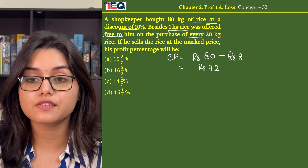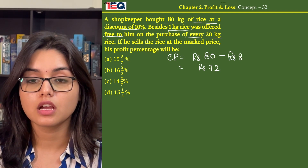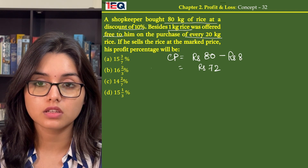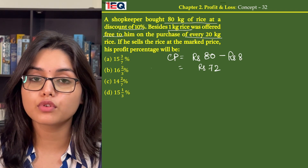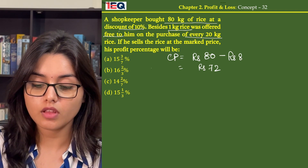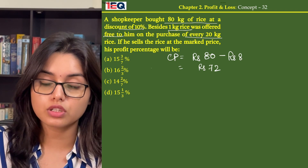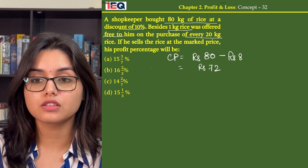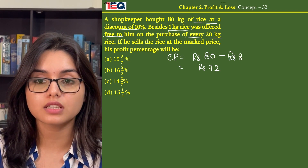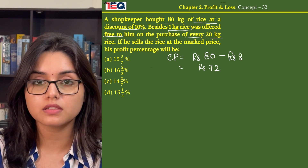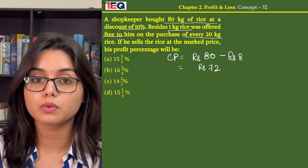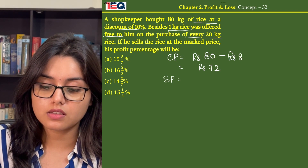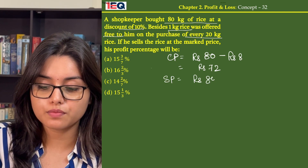Now he received 1 kg rice free on the purchase of every 20 kg rice, so he got 4 kg rice extra. The total rice he had was 84 kg, and he sold the entire lot at the marked price which was Rs 1. So his selling price is Rs 84.